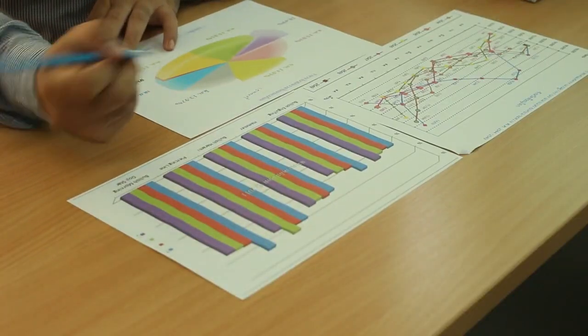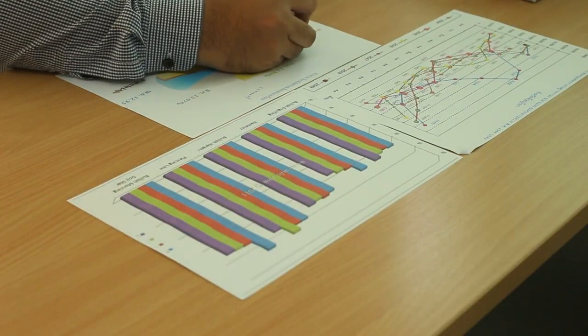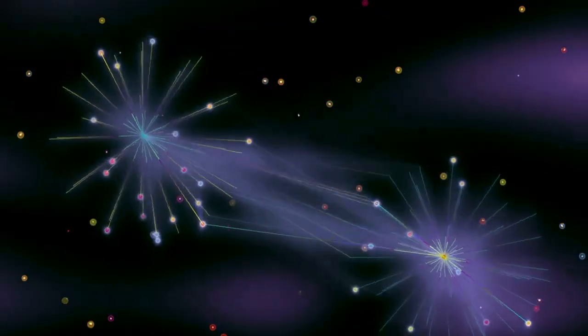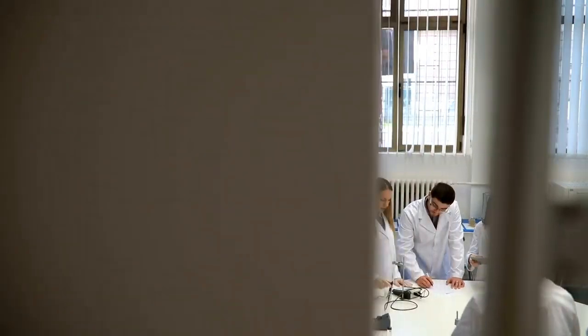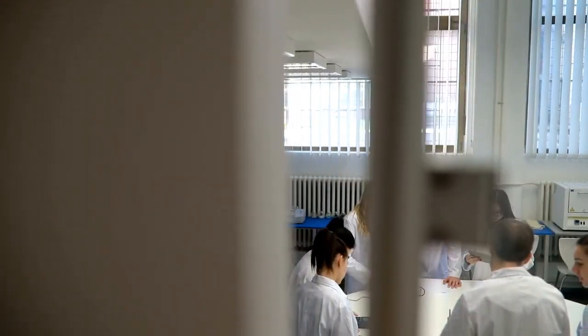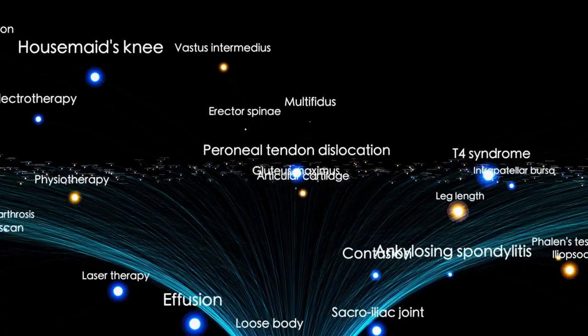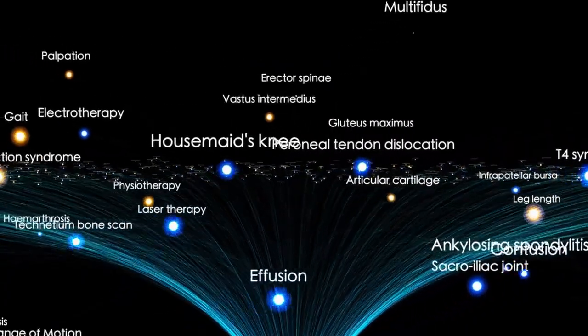One of the most recent and compelling additions to our catalogue of massive cosmic structures is the Saraswati supercluster. This enormous concentration of galaxies was discovered by researchers at the Inter-University Centre for Astronomy and Astrophysics.